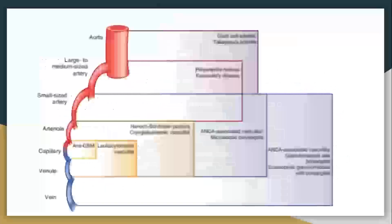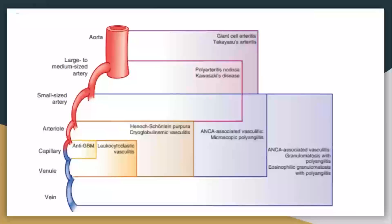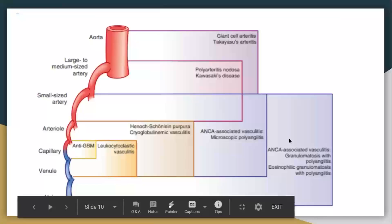Here's a really nice picture from Kelly's rheumatology book that sort of shows you there's overlap, but you can see the range of vessel size. Giant cell arteritis, also known as temporal arteritis — these are medium to large. And then GPA and all this stuff falls in the smaller range.